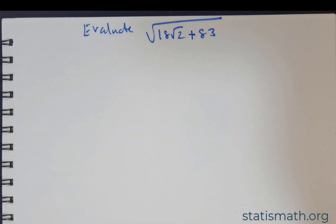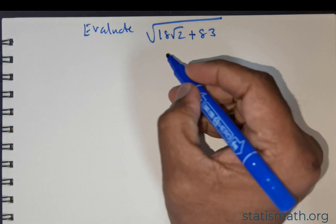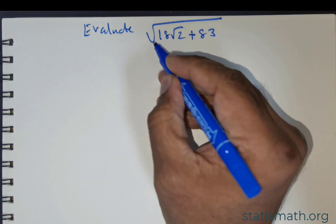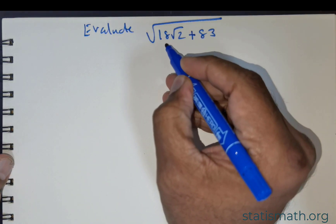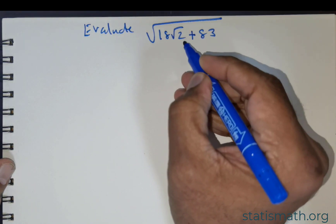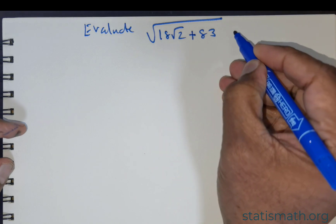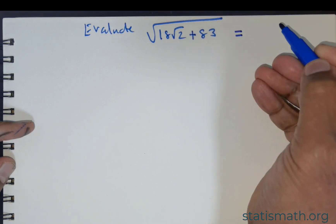Welcome everybody. We have an interesting question. We are expected to find the square root of 18 times root 2 plus 83.